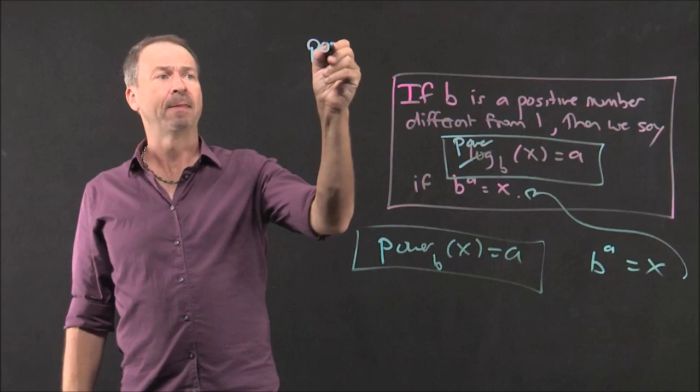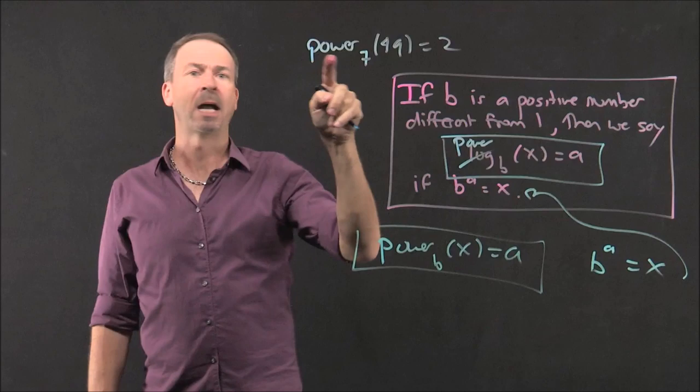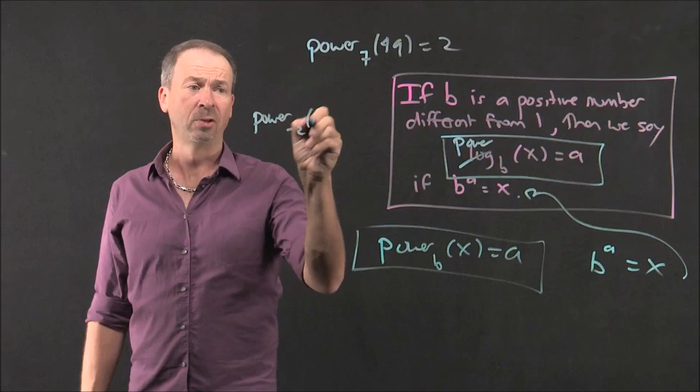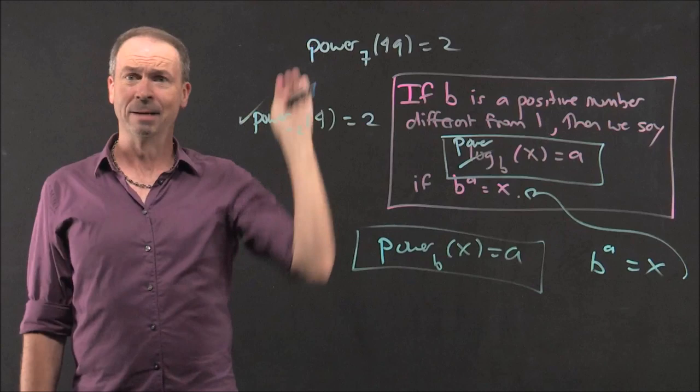For example, I can write this power of 7, 49 equals 2. The power of 7 that gives the answer 49 is 2. That's fine. Then positive numbers seem okay. Can I have negative numbers? Well, sometimes I can. Power of negative 2 that gives the answer 4. What power of negative 2 gives the answer 4? The answer is 2. That's fine. So you can have negative numbers from the bottom.